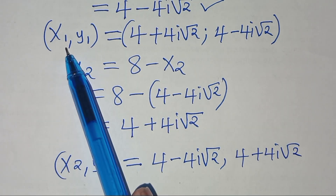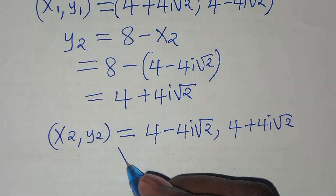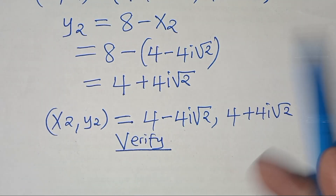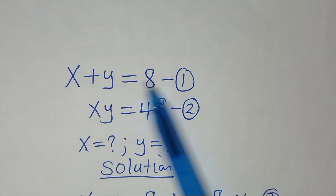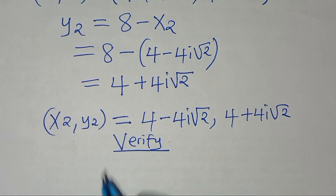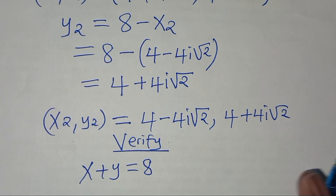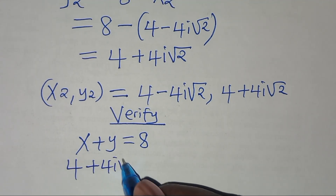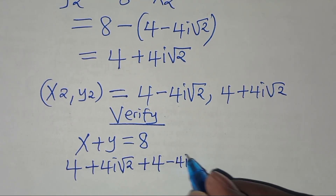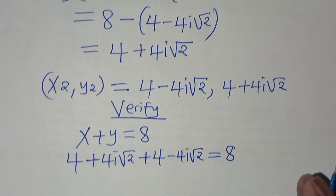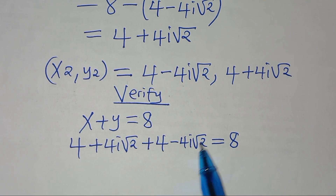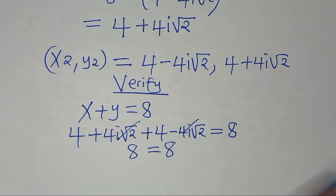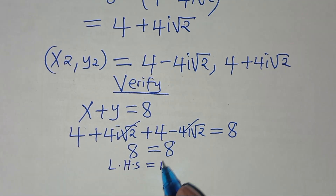Let's verify using equation 1, x plus y equals 8. Substituting x1 and y1: (4 plus 4i root 2) plus (4 minus 4i root 2) equals 8. The imaginary terms cancel, leaving 4 plus 4 equals 8, which confirms the left-hand side equals the right-hand side.